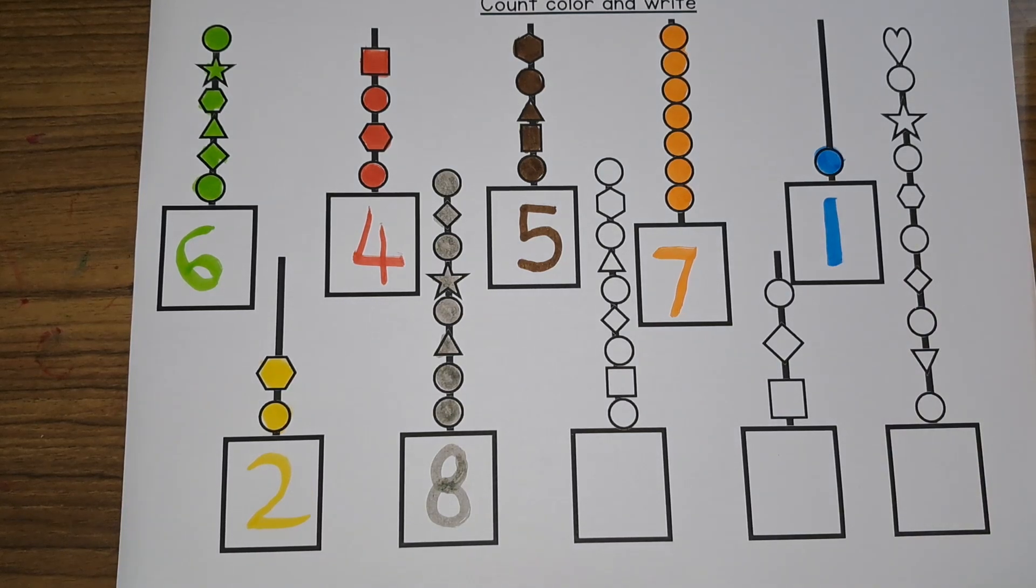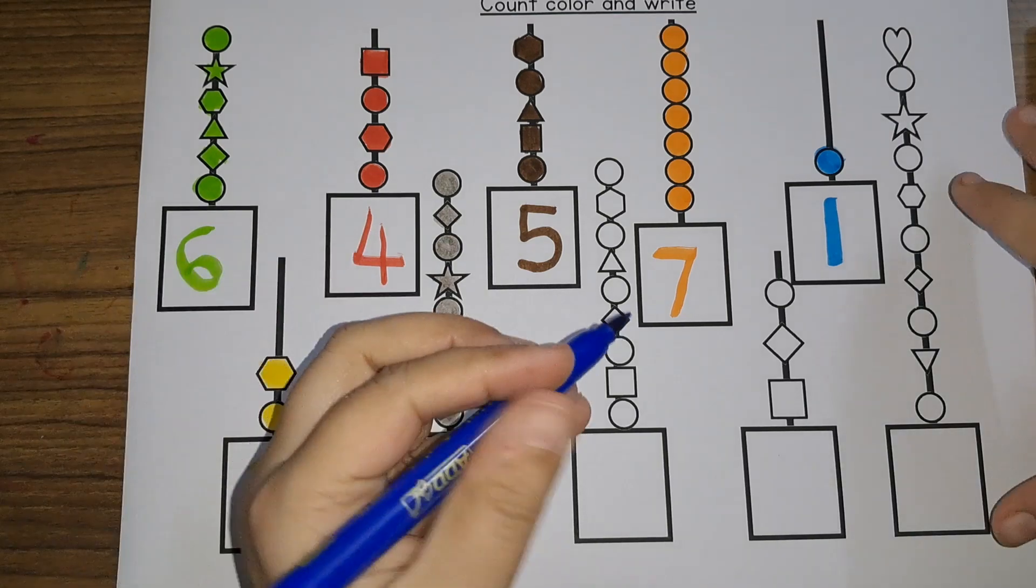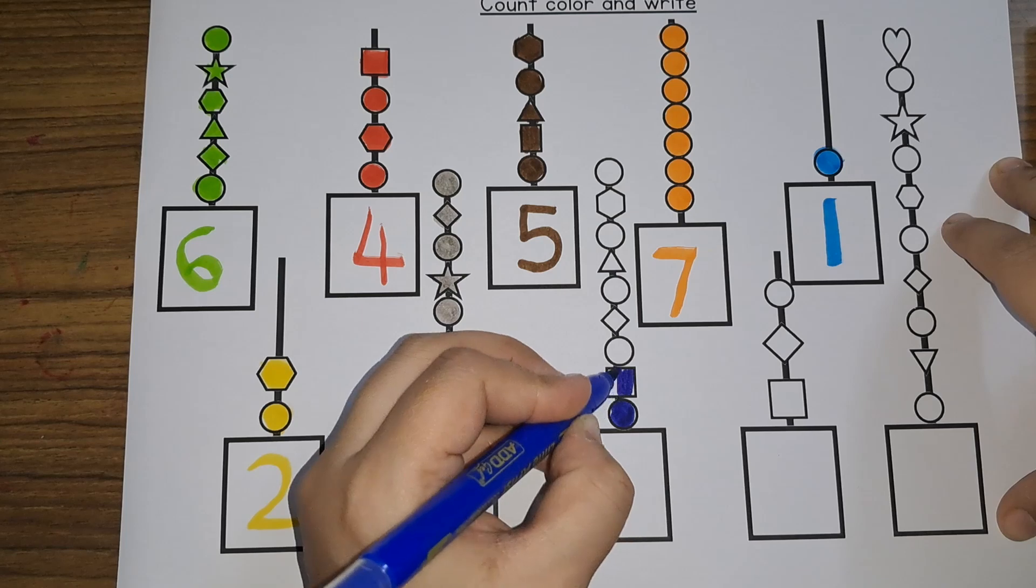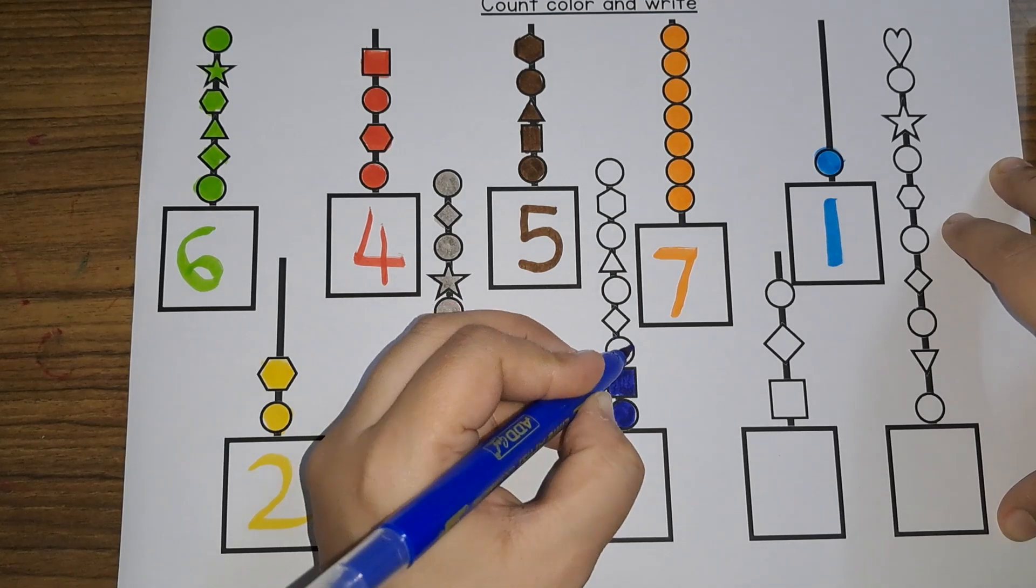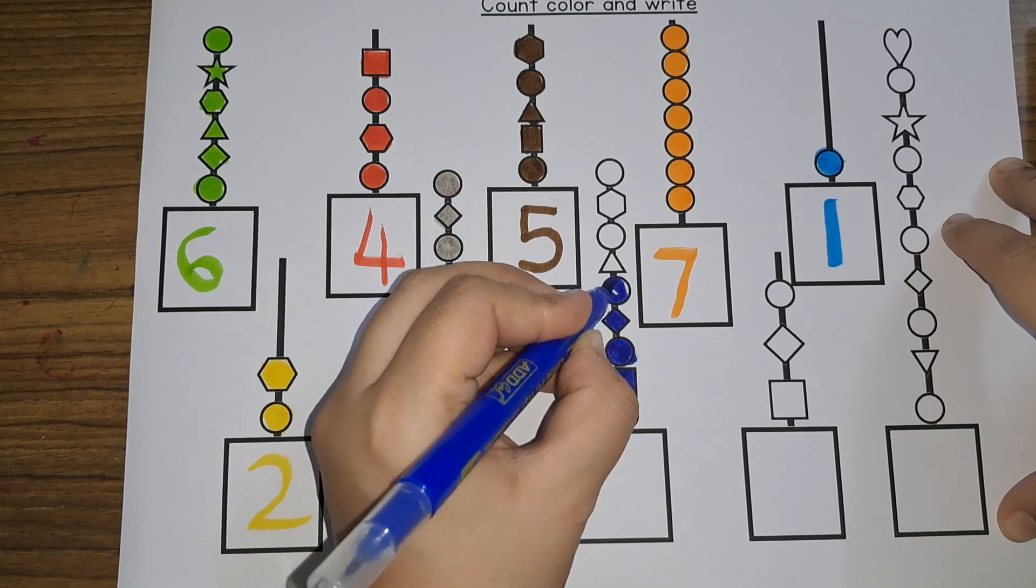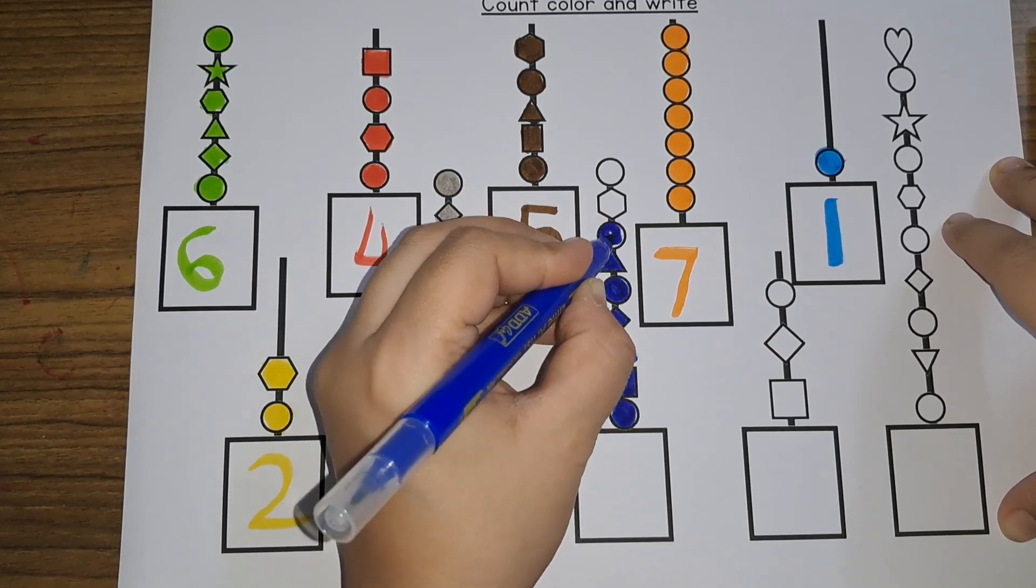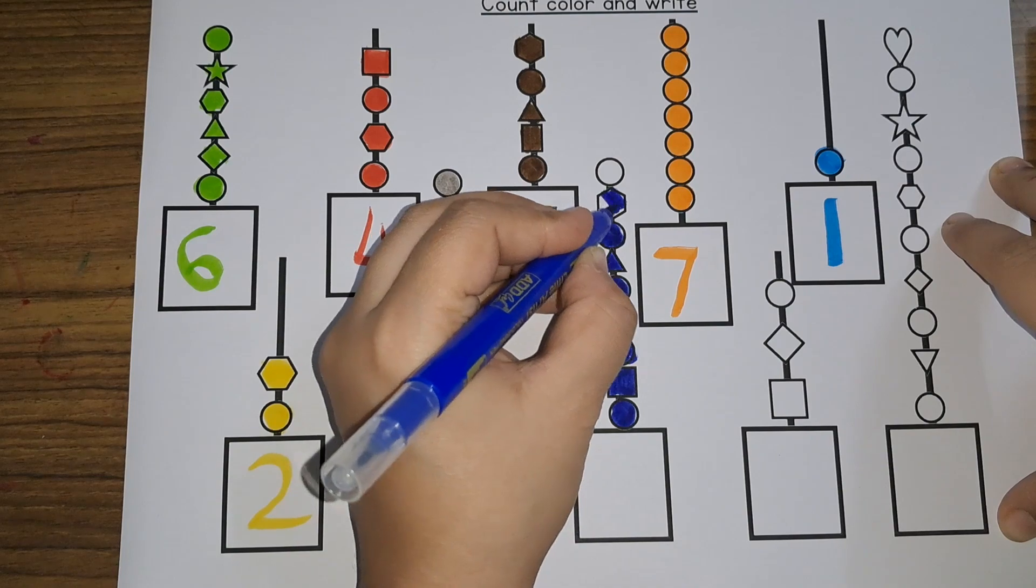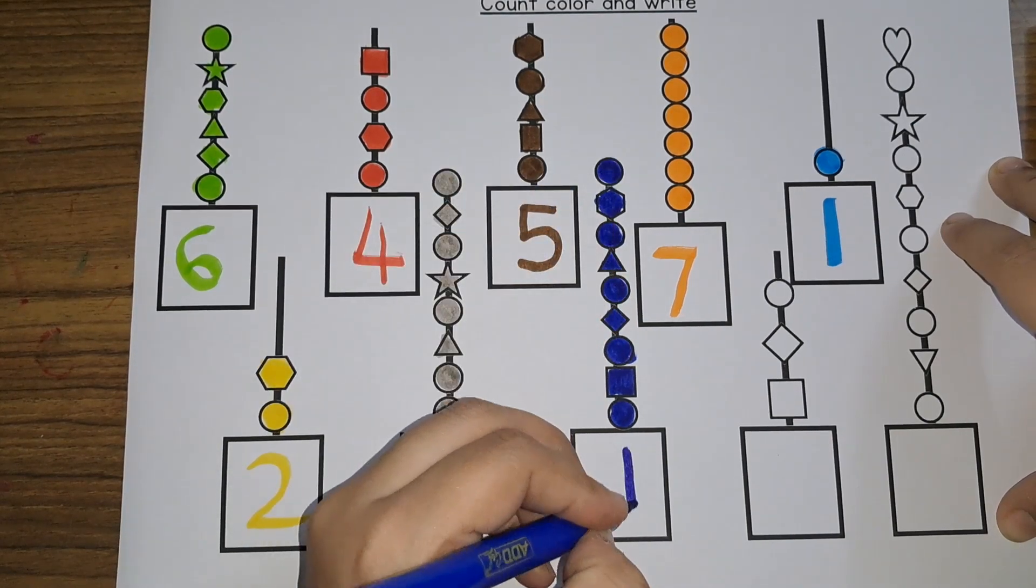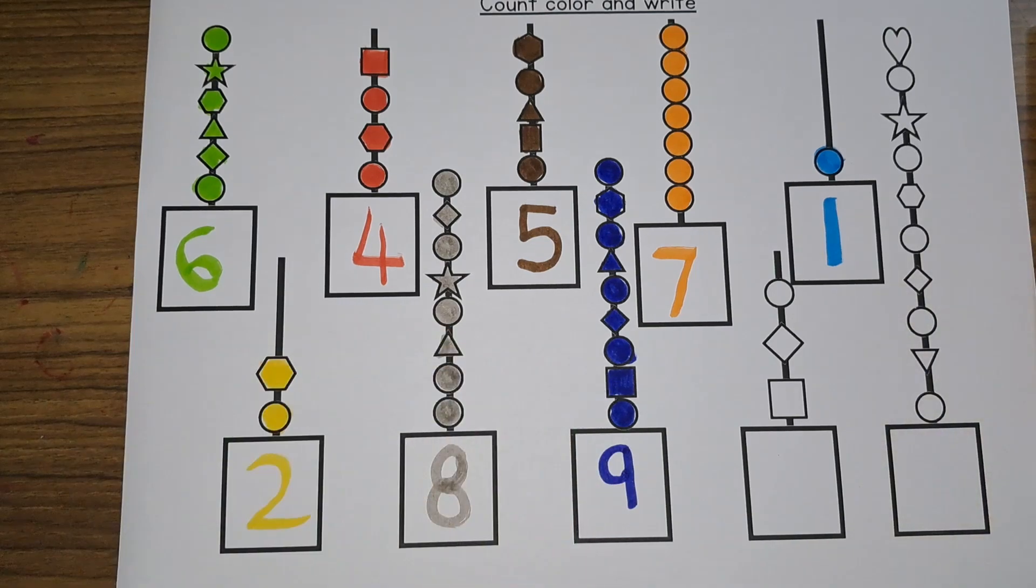Then we have 1, 2, 3, 4, 5, 6, 7, 8, and 9. Number 9. Nine beads.